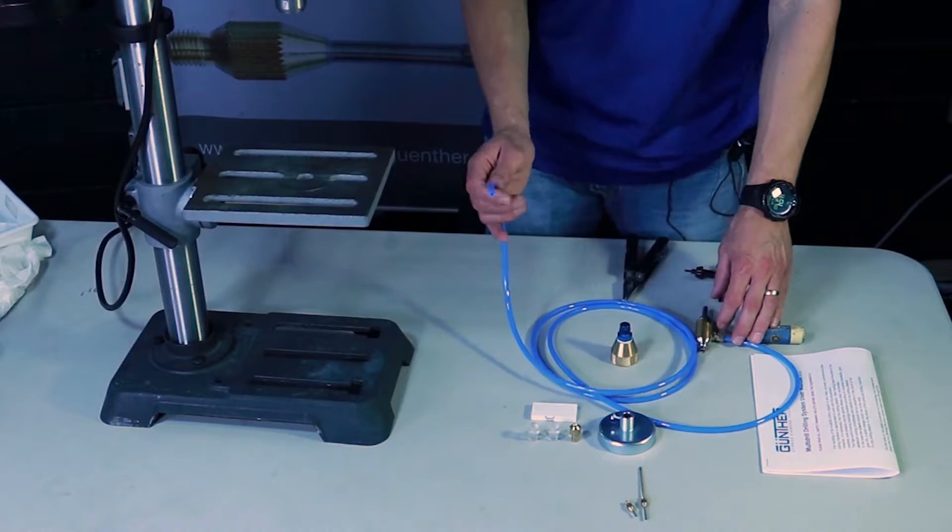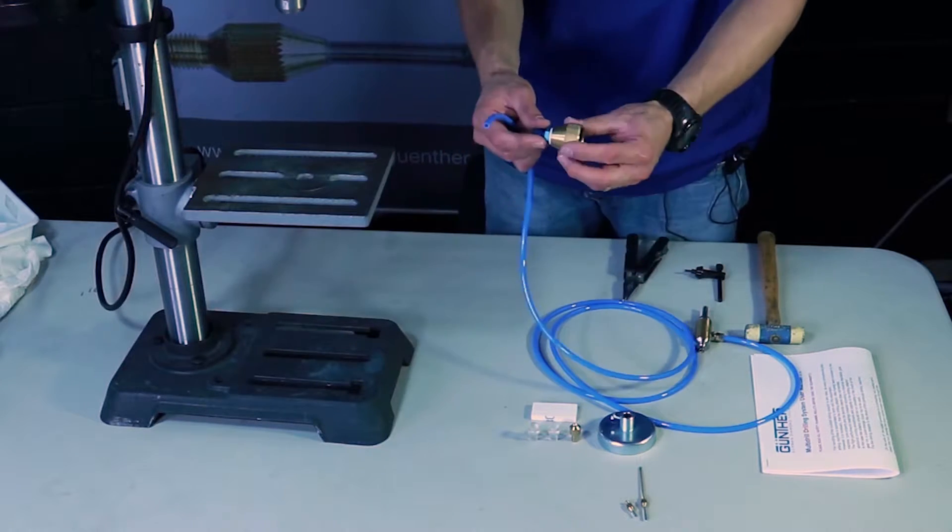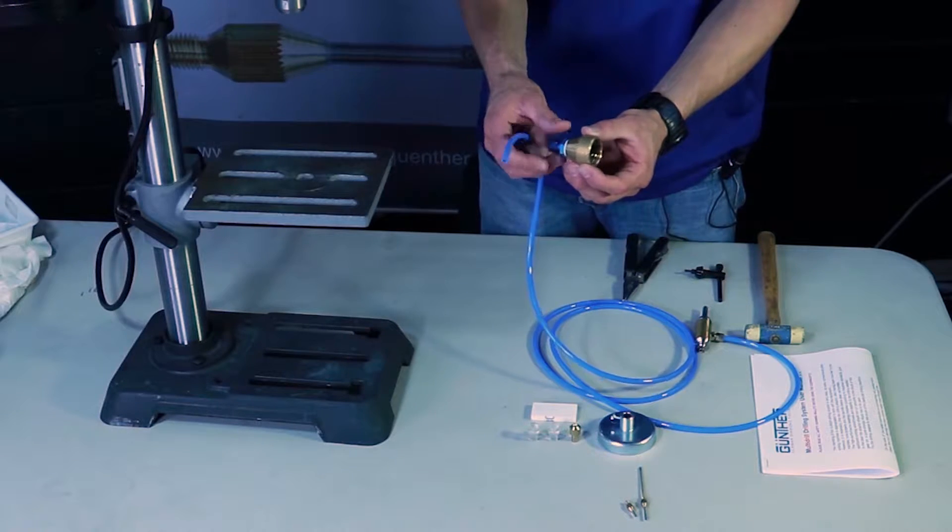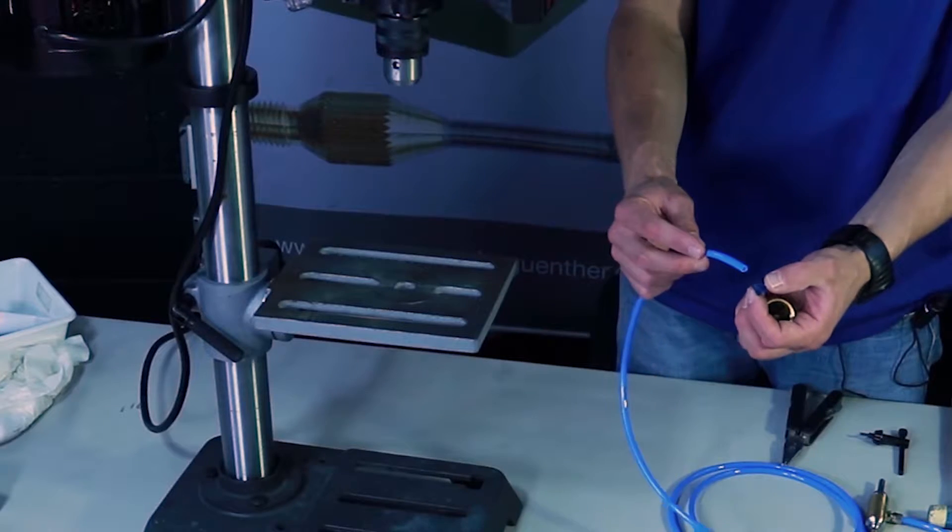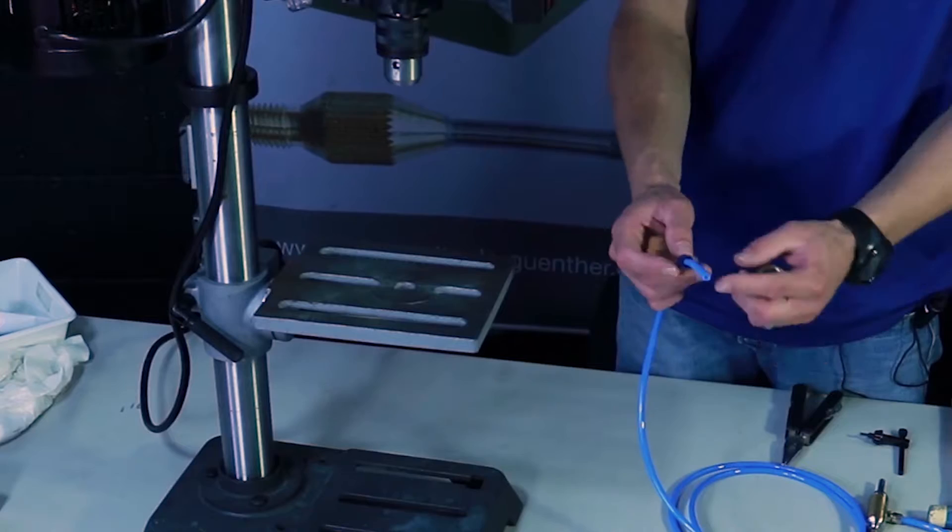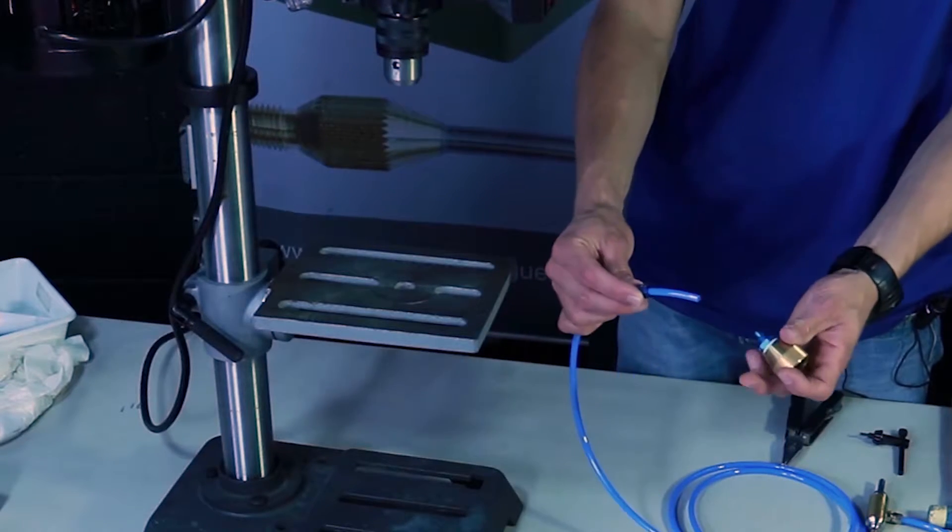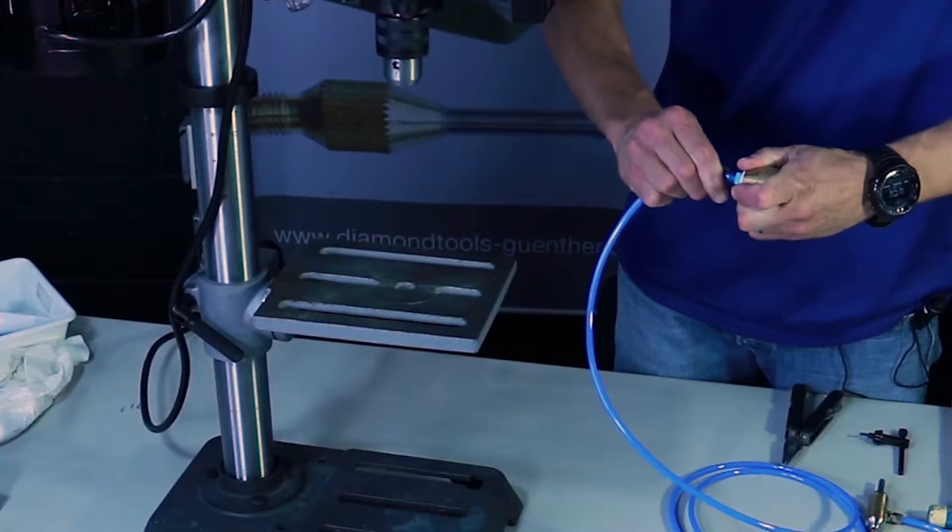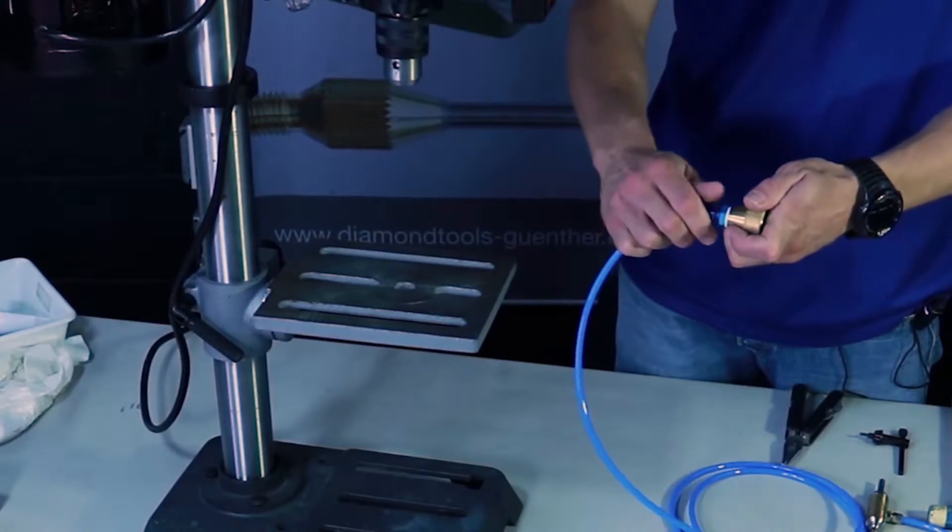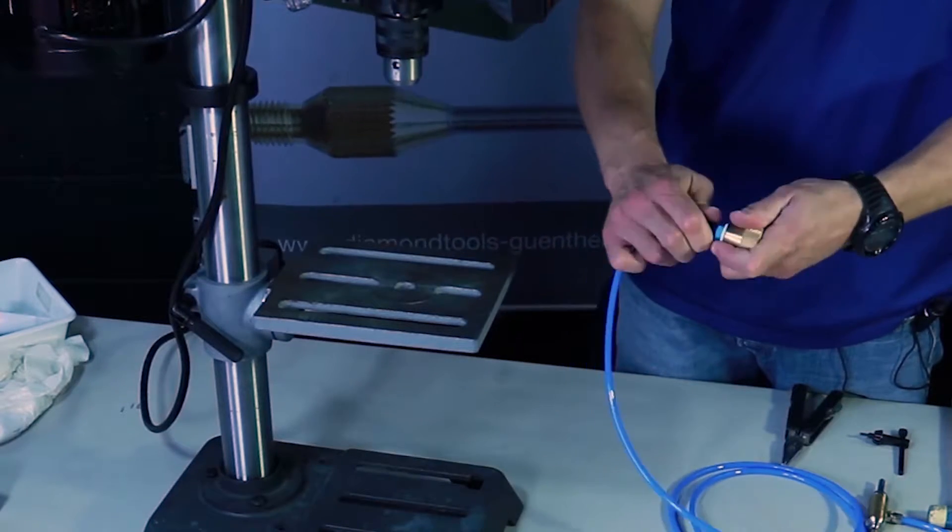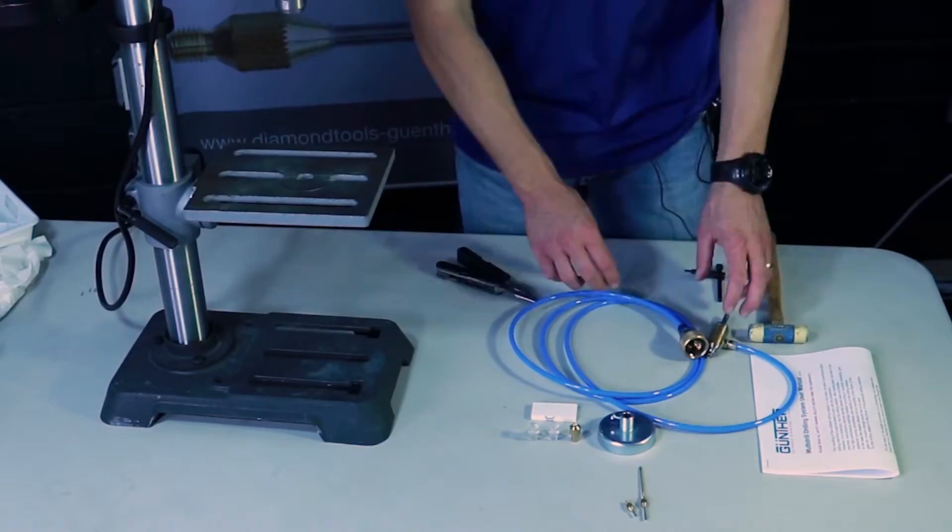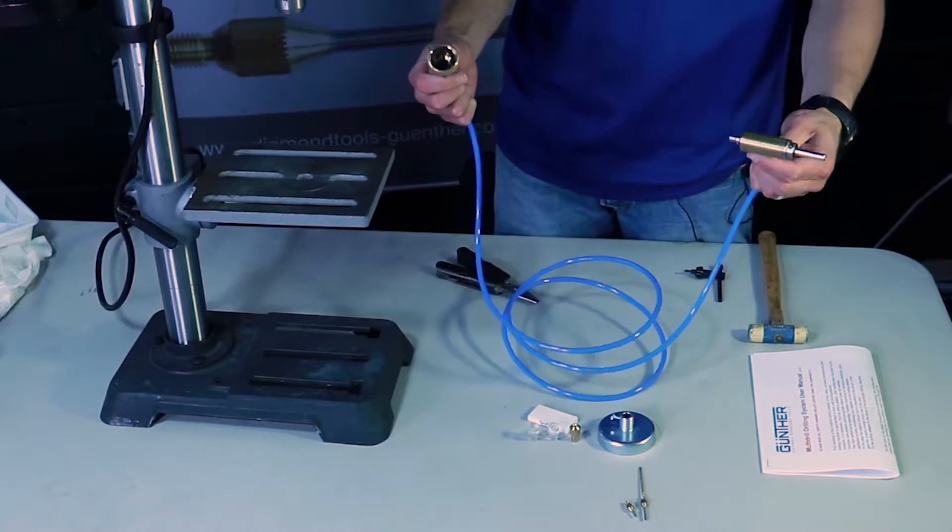And then on the other side we're going to do the same thing with the hose connector. So unthread the nut, put the threaded portion towards the end of the hose, and then insert onto the barb and tighten it back down. And again, just give it a little snug turn with a pair of pliers. So then my water system's connected.